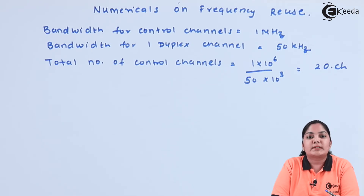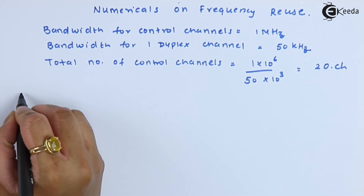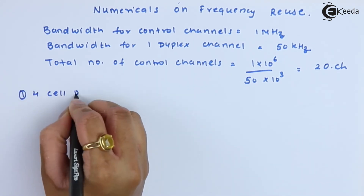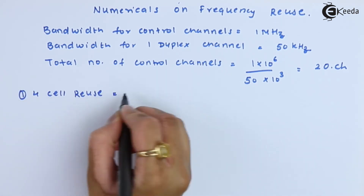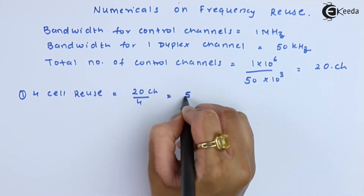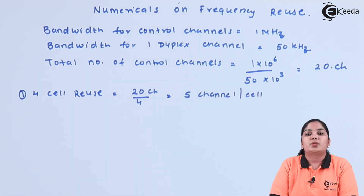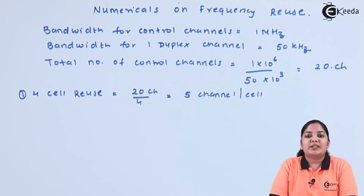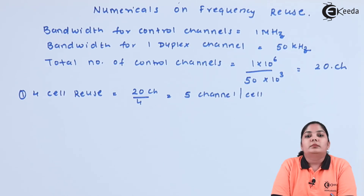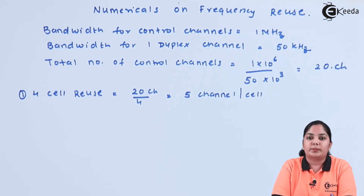Now we will see how to distribute these 20 control channels for 4 cell reuse, 7 cell reuse, and 12 cell reuse. In 4 cell reuse, 20 channels divided by 4 gives 5 channels per cell. Remember, every cell needs only one control channel since control channels are used for setup purposes only.